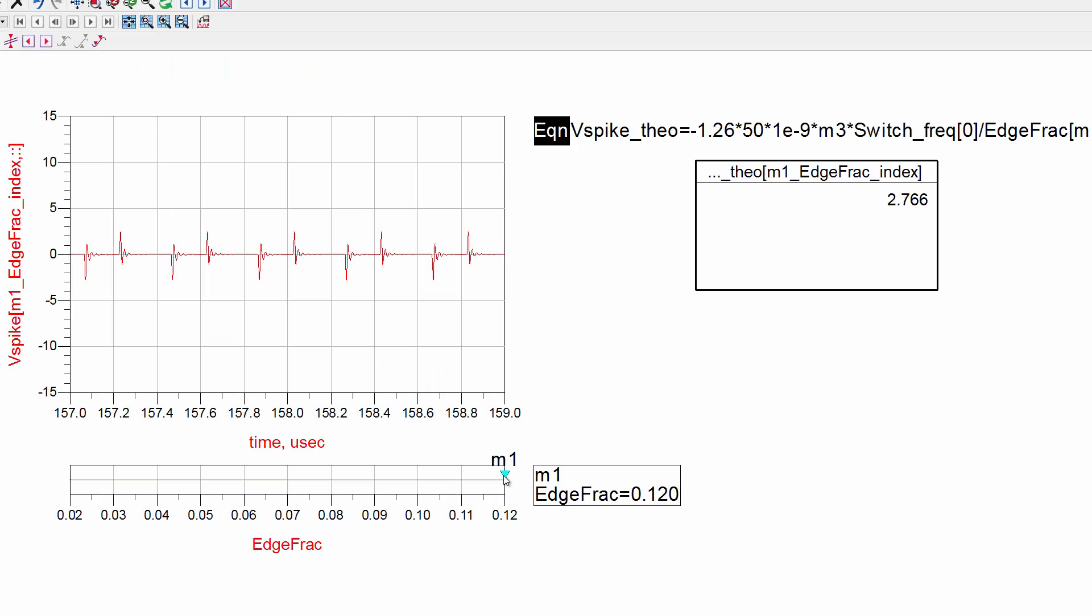So how does this rule of thumb work out in practice? I've coded up this equation in ADS here, and let's compare it to our accurate result from the circuit solver. You can see the spike here is around just under 3 volts, and the formula is around under 3 volts.